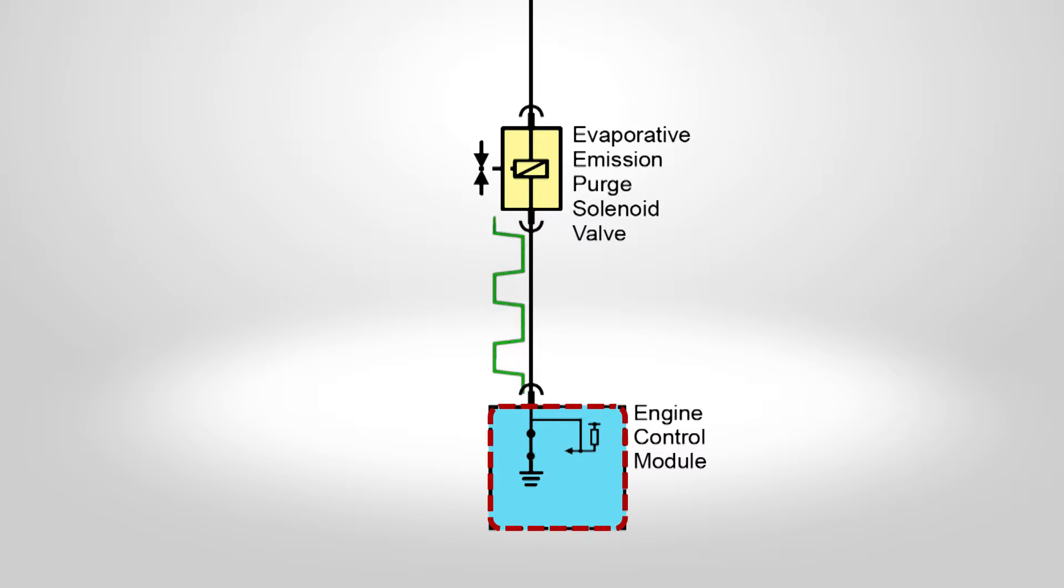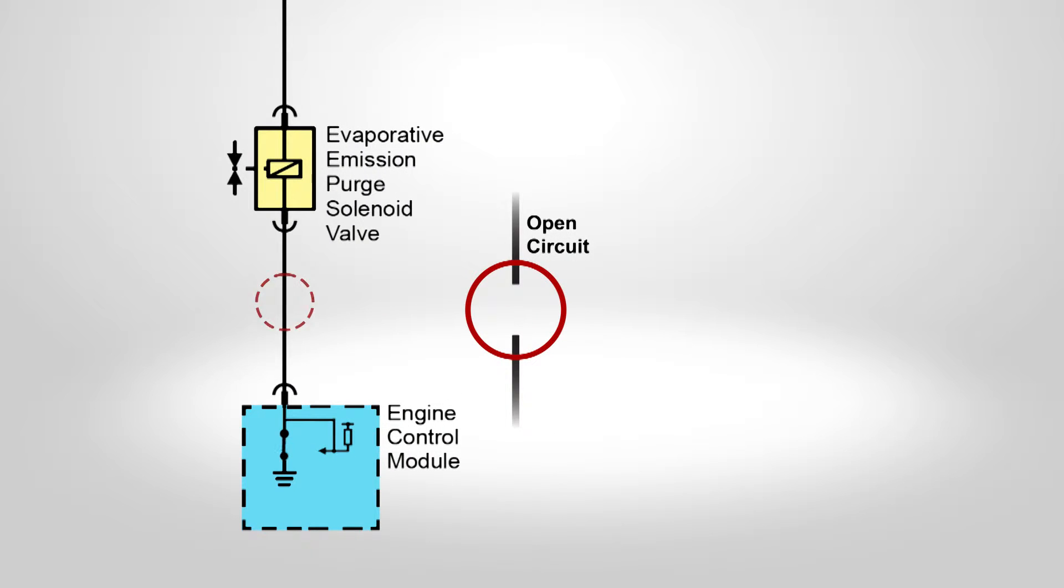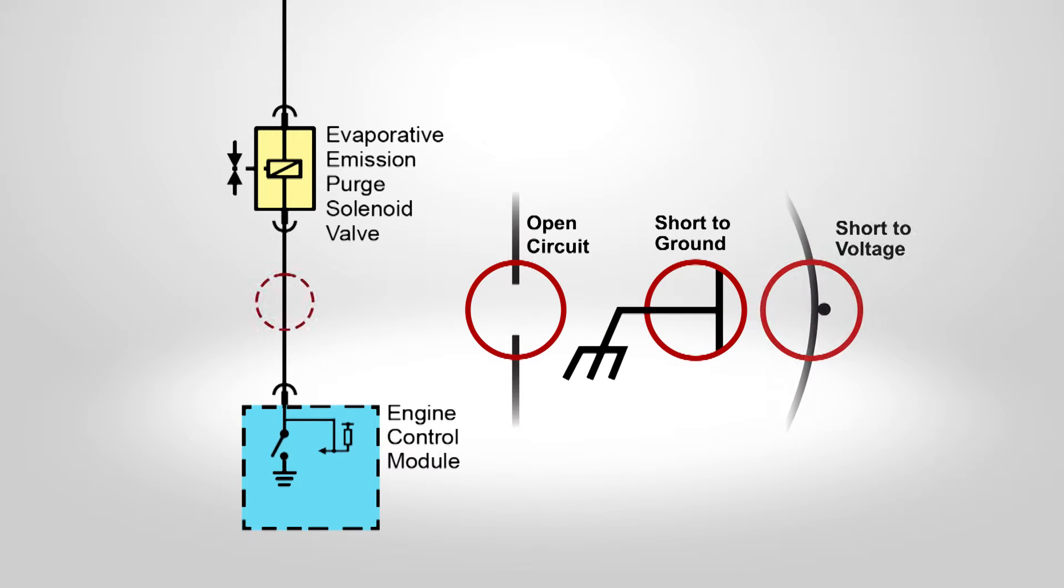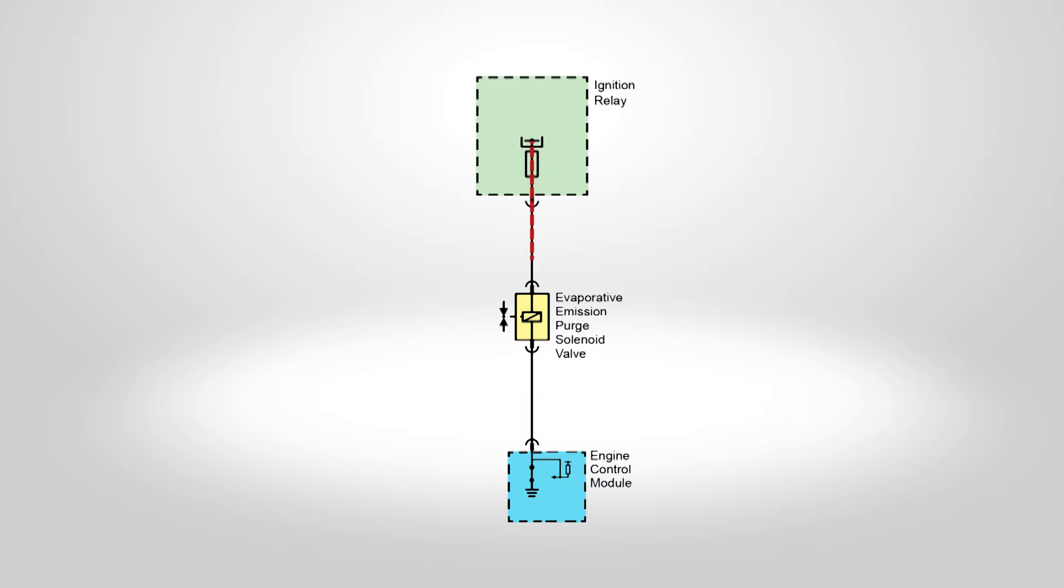The driver may be equipped with a feedback circuit. The ECM can then determine if the control circuit is open, shorted to ground, or shorted to voltage by monitoring the feedback circuit. Ignition voltage is supplied directly to the EVAP purge solenoid valve from the ignition relay. This relay may be monitored for shorts and opens by the ECM.